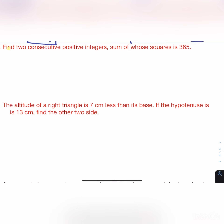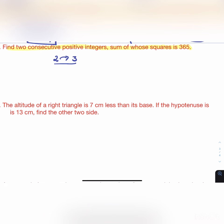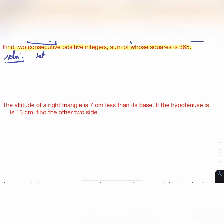Next question: find two consecutive positive integers whose sum of squares is 365. Consecutive positive integers means continuous numbers like 2 and 3. Let x and x + 1 be the consecutive positive integers.